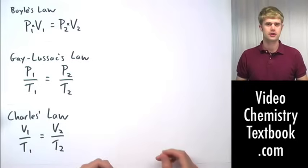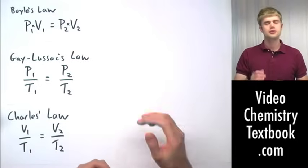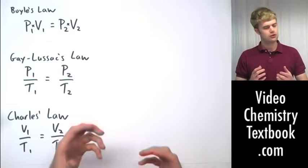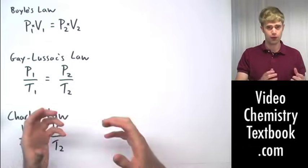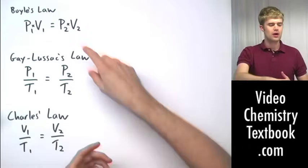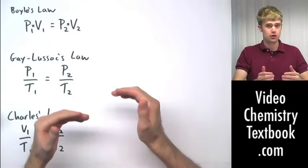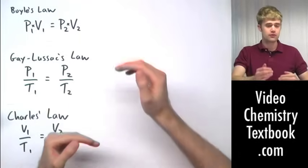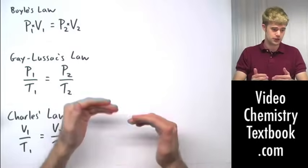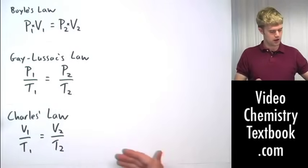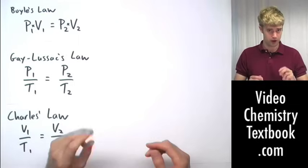These are the three gas laws that we've looked at so far. They each assume that some sort of change has happened, and they tell us how two variables relate to each other before and after the change. Boyle's law has pressure and volume. We make some sort of change in pressure or in volume, and it tells us how the other one is going to respond. Gay-Lussac's law, pressure and temperature, and Charles' law, volume and temperature. Two variables, always.